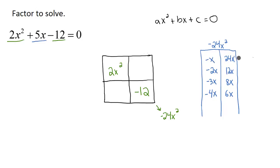So now let's add these terms together. Negative 1x plus 24x is going to be 23x. Negative 2x plus 12x is going to give me 10x, and that's not 5x either. Negative 3x plus 8x is going to be 5x, and those are going to be the pair of terms that we need.